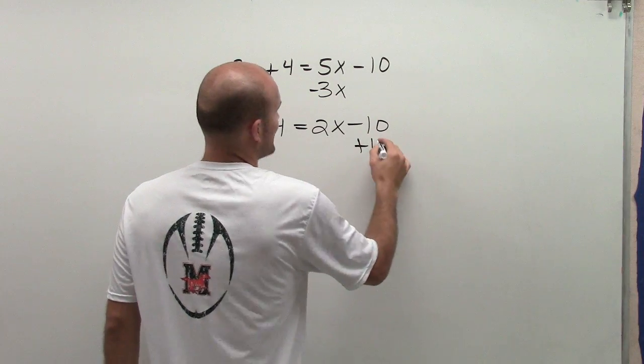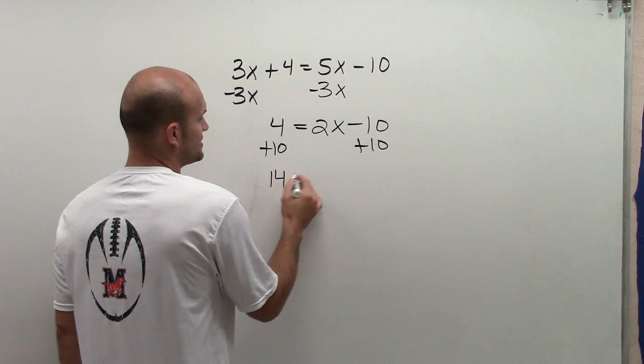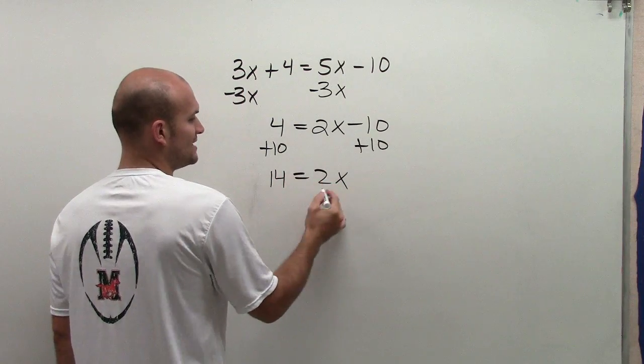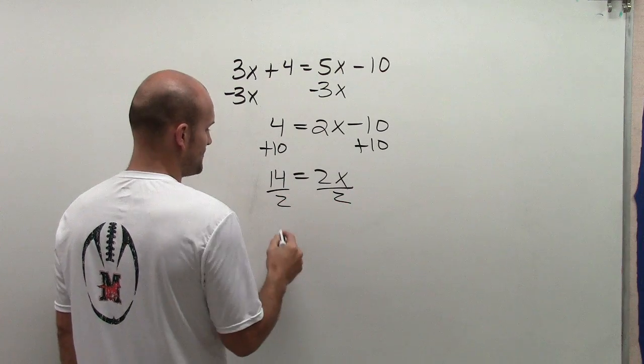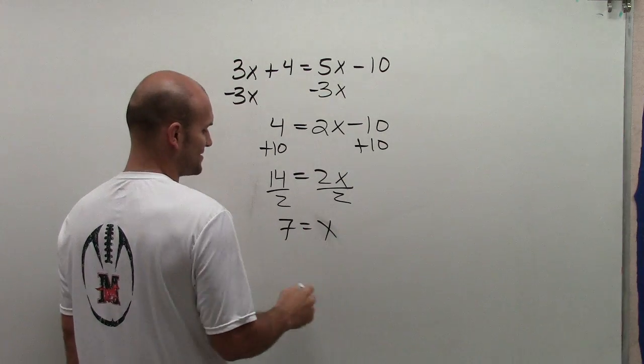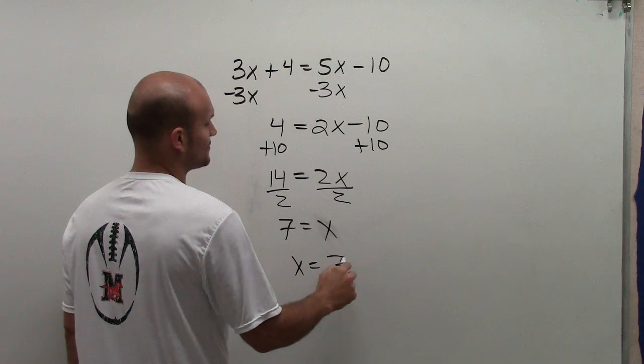So what I'll do is I'll add 10 by using the addition property of equality to get 14 equals 2x, as that goes to 0. So 14 equals 2x, divide by 2. You could have 7 equals x. Or I can just rewrite it as x equals 7.